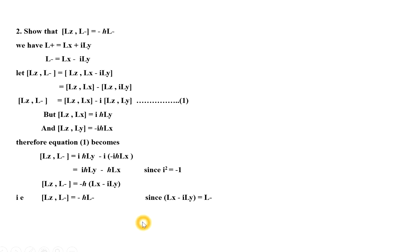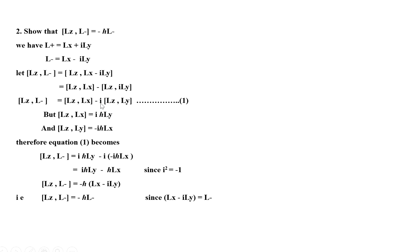Let us now look at the second example: prove that the commutator bracket LZ comma L minus is equal to minus H-cross L minus. To prove this relation, we again consider the definition of the ladder operator — the rising operator L plus and the lowering operator L minus. Consider the left-hand side: commutator bracket LZ comma L minus equals LZ comma LX minus iLY. Separating the bracket gives LZ comma LX minus LZ comma iLY, and taking i outside: LZ comma L minus equals commutator LZ comma LX minus i times commutator LZ comma LY. Consider this as equation number 1.